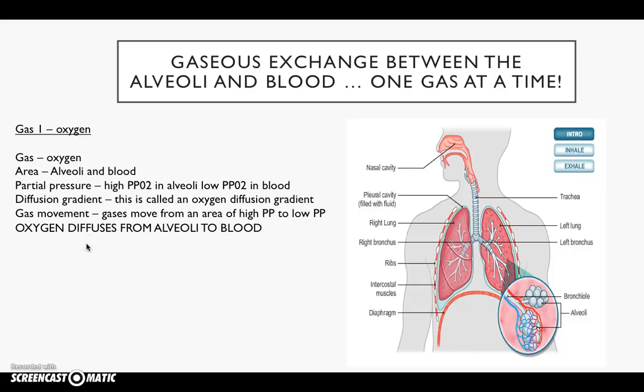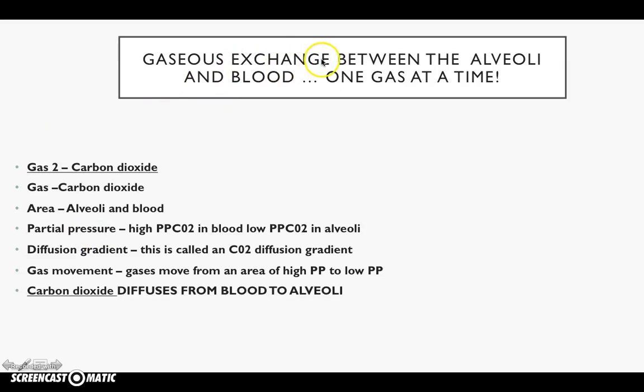Vice versa — gas two: carbon dioxide. The gas is carbon dioxide, the area is still the alveoli and the blood. We have a high partial pressure of carbon dioxide in the blood and a low partial pressure of carbon dioxide in the alveoli. The diffusion gradient is called a carbon dioxide diffusion gradient. Gas moves from an area of high partial pressure to an area of low partial pressure — therefore carbon dioxide moves from the blood into the alveoli, and we breathe out carbon dioxide. That is gaseous exchange at rest between the alveoli and the blood.